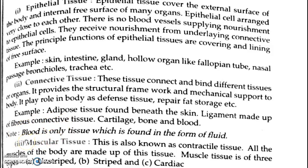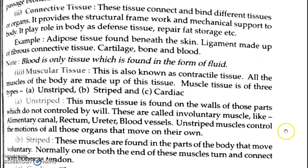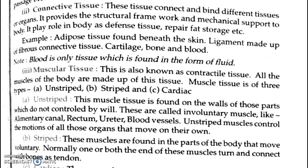Now we come to the third type — muscular tissues. Muscular tissue is also known as contractile tissue because muscles work through contractions. All the muscles of the body are made up of this tissue. Muscle tissues are of three types: unstriated (unstripped), striated (stripped), and cardiac.